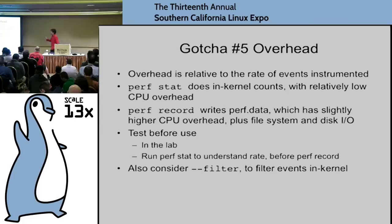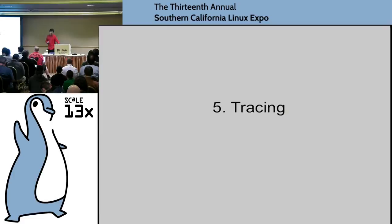The last gotcha is overhead, which is relative to the rate of events instrumented. That's why I start with perf stat — to understand event frequency before doing perf record. You can also use filters to cut down events in kernel before exporting to user level, reducing overhead.